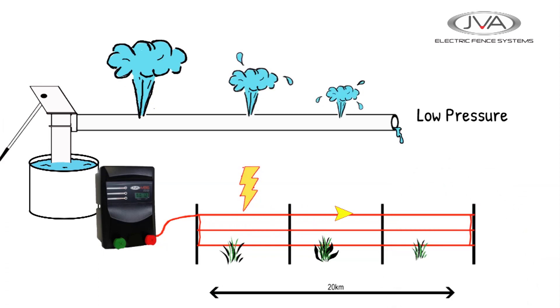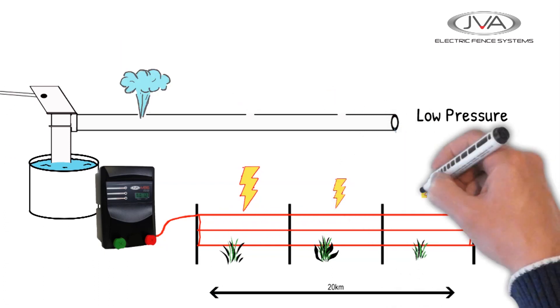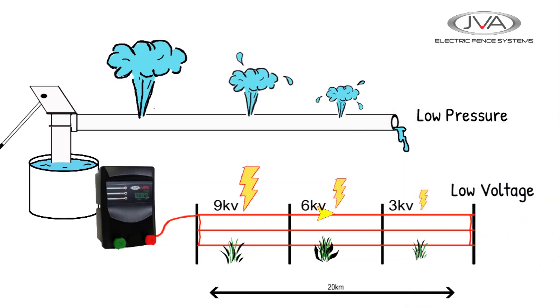The same with a fence. If we don't maintain it and let vegetation grow onto the wires, then the current will leak and we get a lower voltage down the line. This is why it's important to keep your fence clean, so you get the maximum potential out of it.